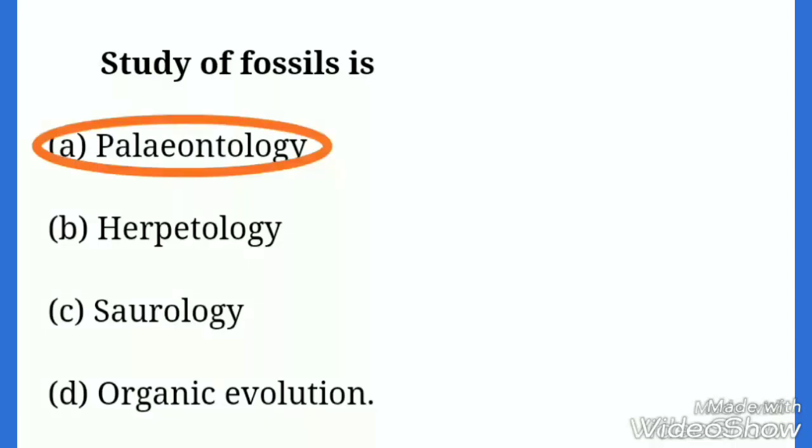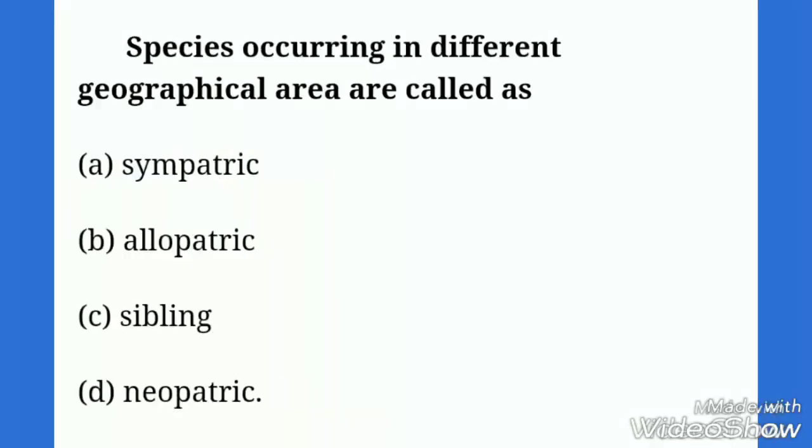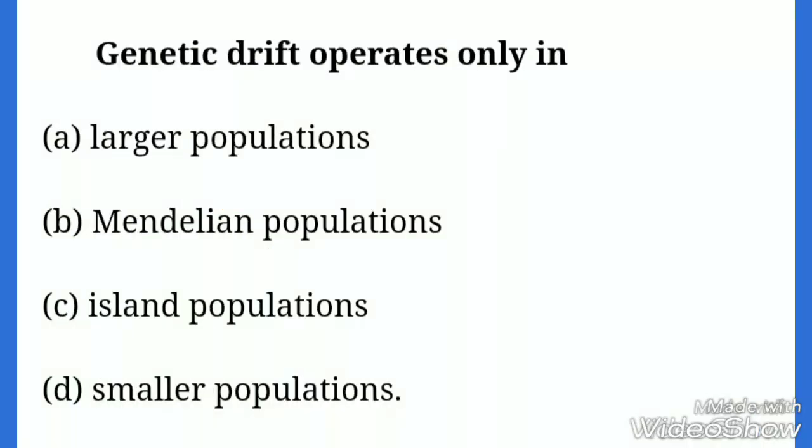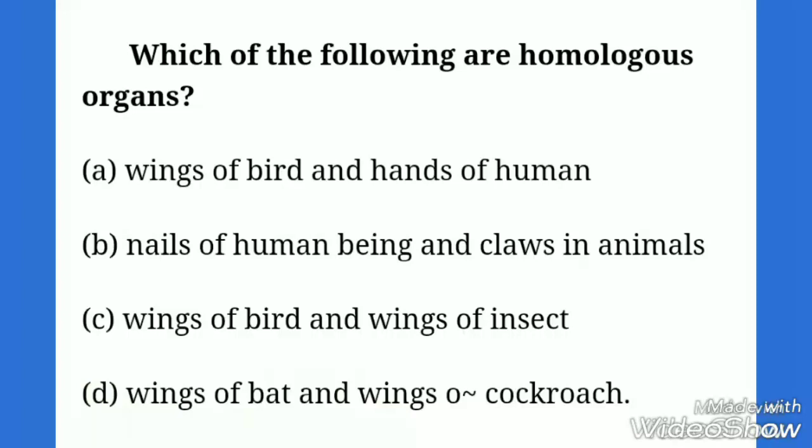Species occurring in different geographical area are called? The correct option is B, allopatric species. And genetic drift operates only in smaller populations.